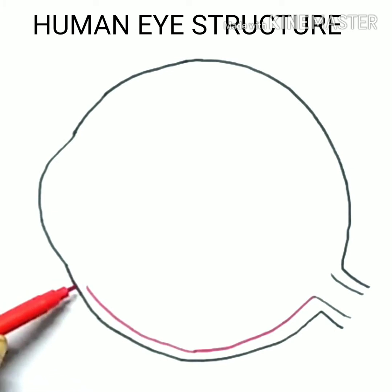Iris: Muscular diaphragm that controls the size of the pupil. It is behind the cornea. It helps in controlling the light by changing the size of the pupil.